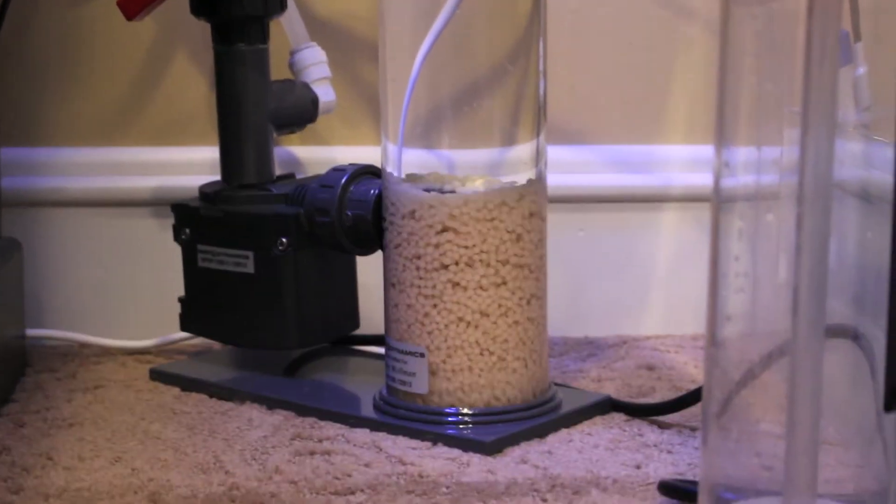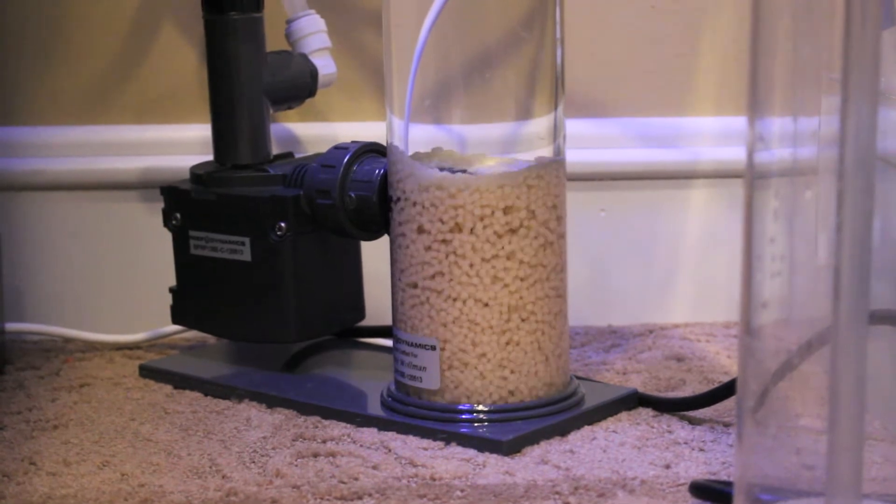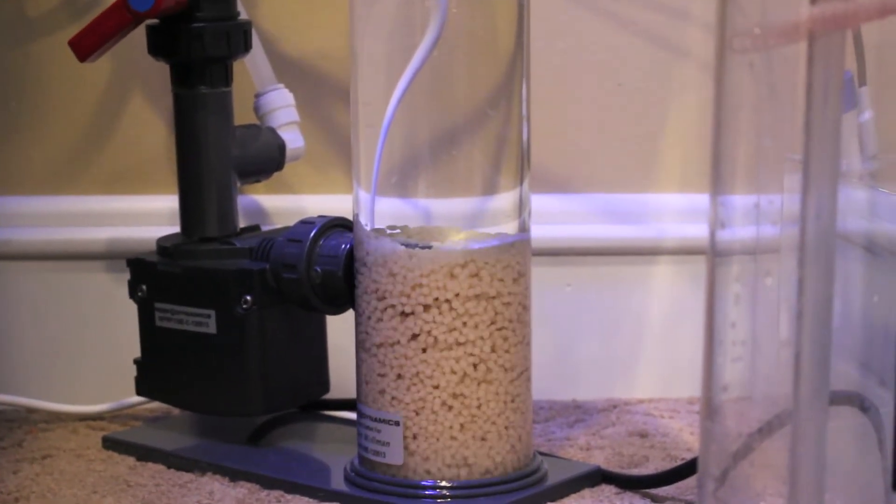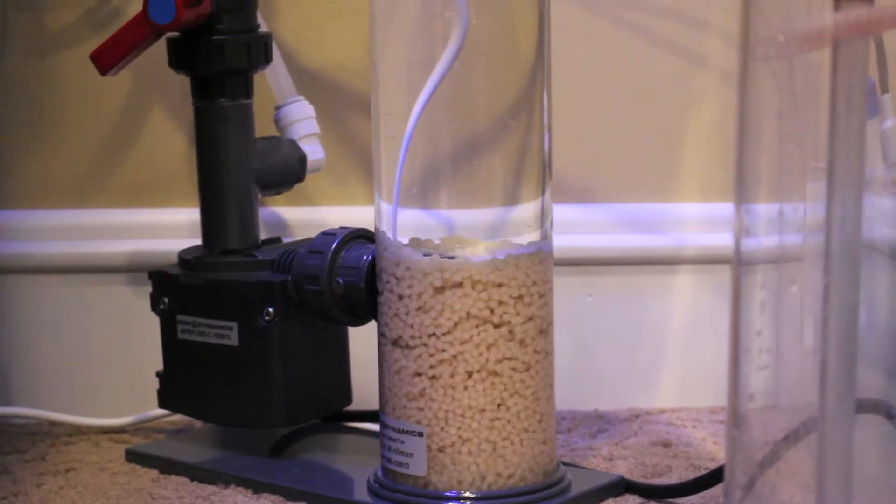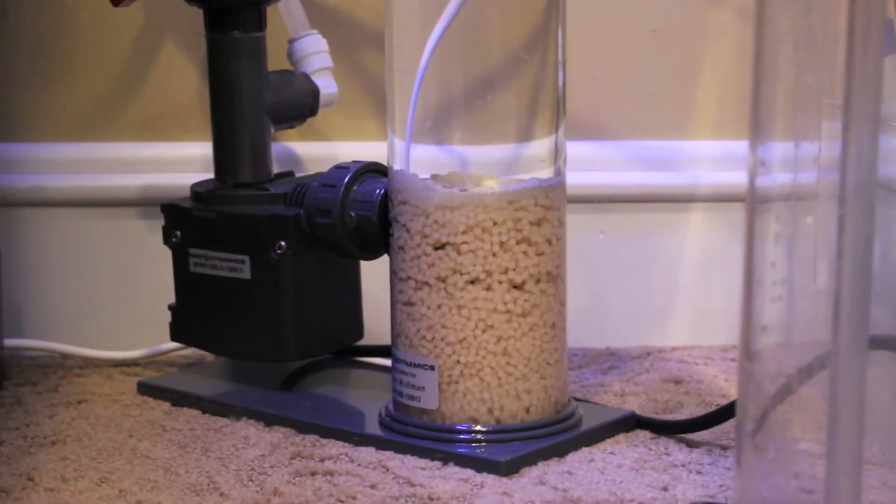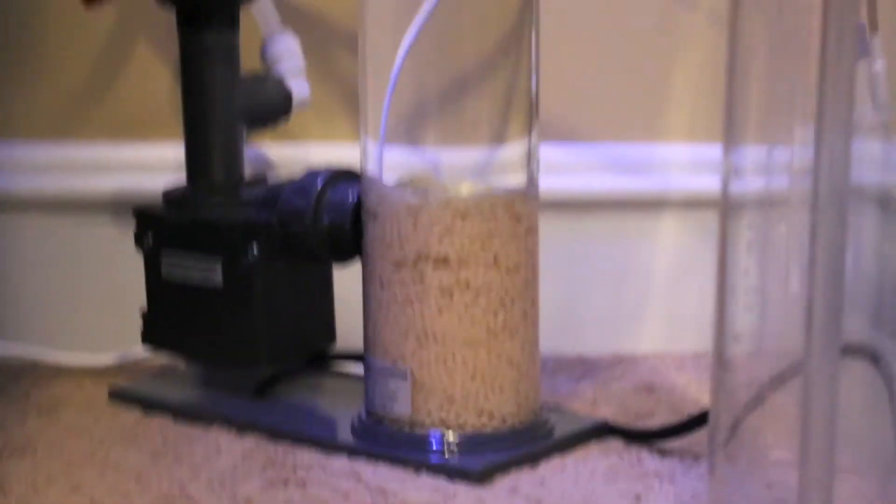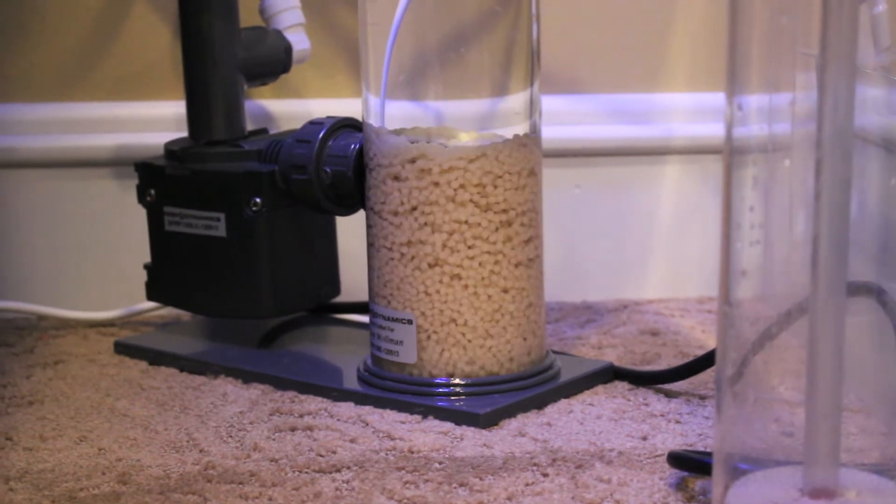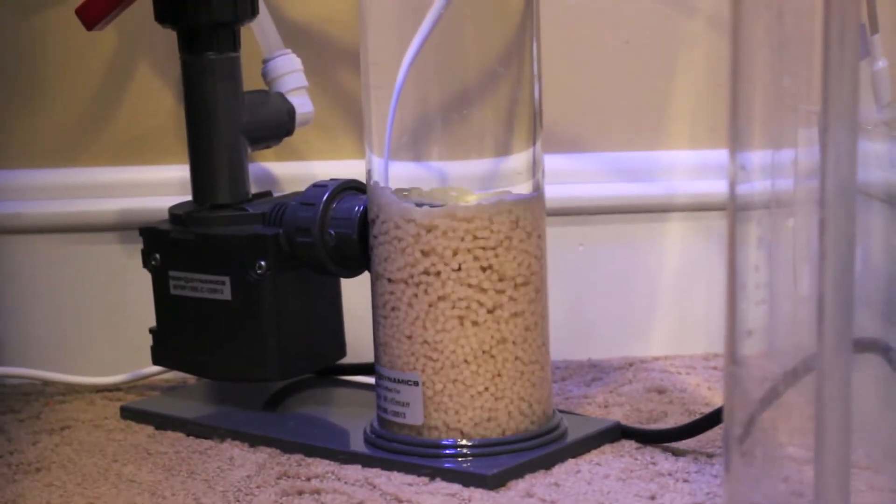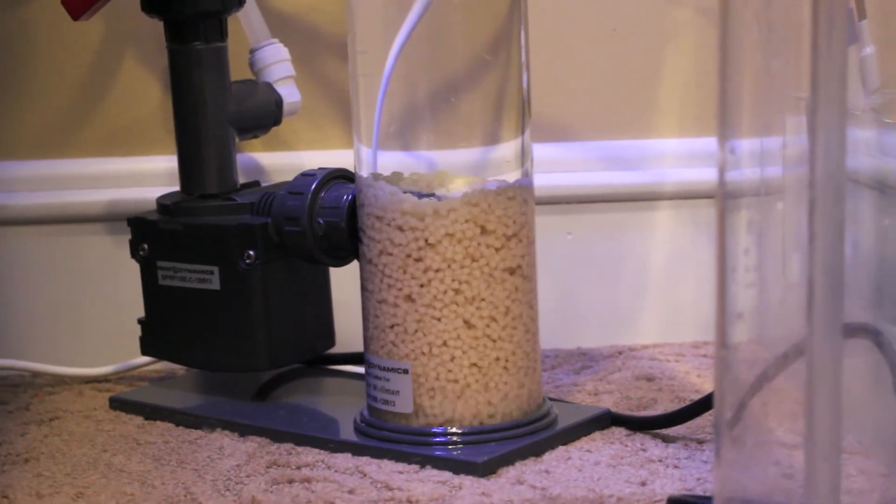So you want a fairly gentle tumbling action. You could maybe argue that my tumbling here is maybe a little too strong, but I think it's pretty close. You don't want to have an aggressive tumbling action that actually shreds the bacteria off of the biopellet, but you don't want such a limited tumbling or no tumbling at all because...